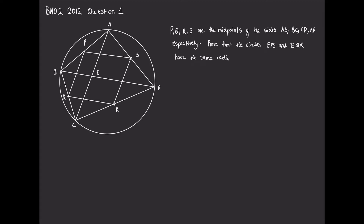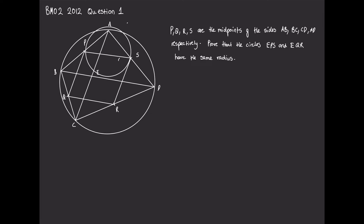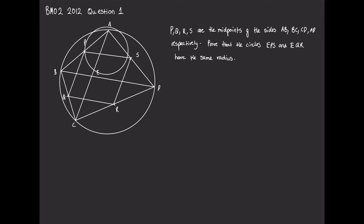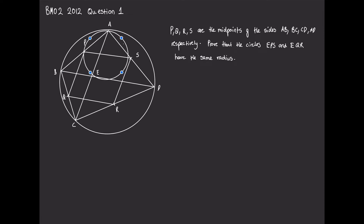Now that we have that written down, it's always useful to read what the question is trying to ask us to prove. We can draw the circles EPS and EQR to get a better visual representation. The question gives us very convenient information: P, Q, R, S are all midpoints, which gives us Thales' mid-segment theorem; ABCD is a cyclic quadrilateral, so those theorems apply; and we're trying to prove that circles EPS and EQR have equal radius, which leads to ideas such as the extended sine rule.